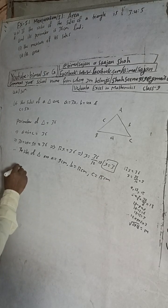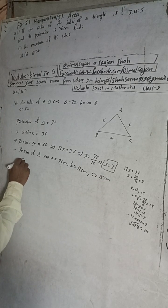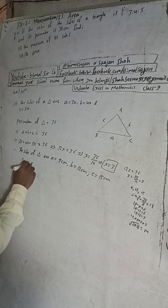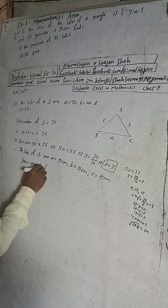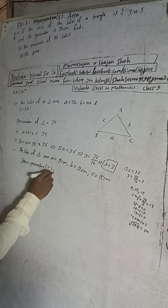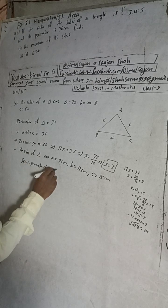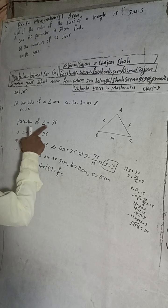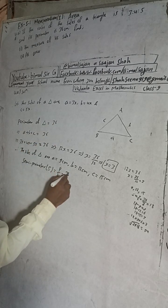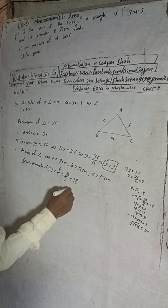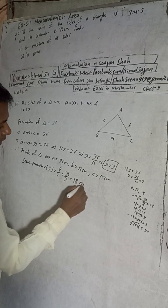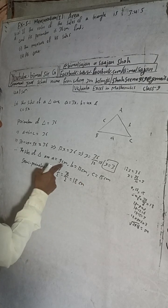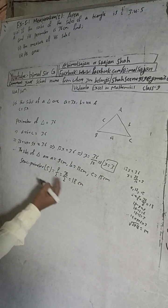Now, we calculate the semi-perimeter. S = perimeter ÷ 2 = 36 ÷ 2 = 18 cm. Alternatively, you can add all the sides and divide by 2 to get the same answer.